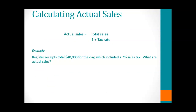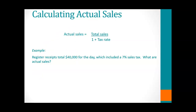Sometimes you have a problem where the cash register shows total sales but does not indicate what portion was for sales and what portion was for sales tax. To do these types of calculations, you take your total sales and divide by one plus the tax rate. For example, let's assume there's $40,000 in the cash register for the day, which includes a 7% sales tax. The question is: what are the actual sales — how much of the $40,000 represents actual sales, and how much represents the sales tax?